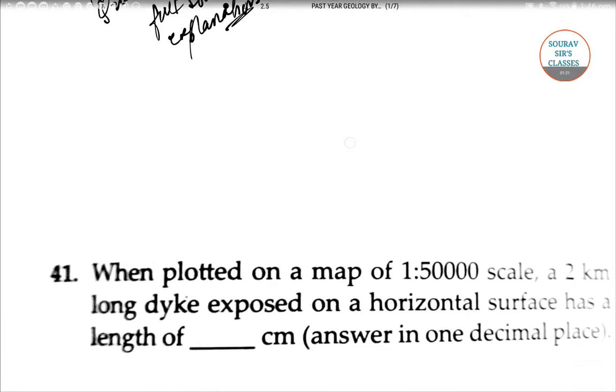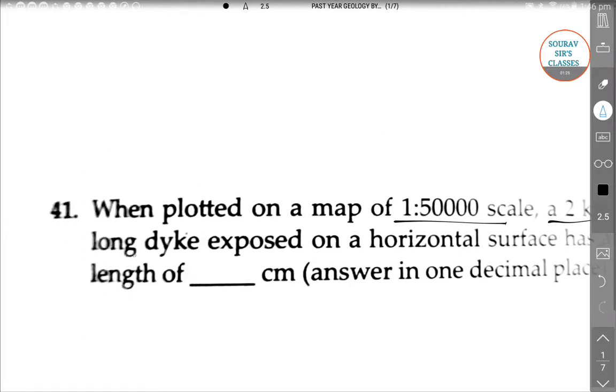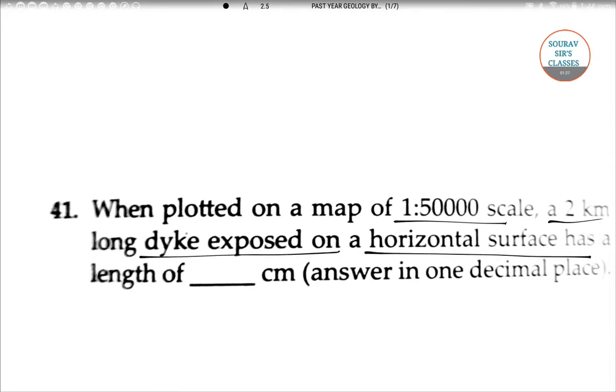First question: When plotted on a map of 1:50,000 scale, a 2 kilometers long dyke exposed on a horizontal surface has a length of dash centimeter. This is a numerical question, so let's solve it.